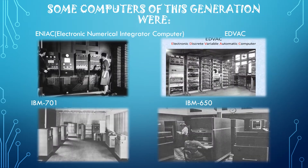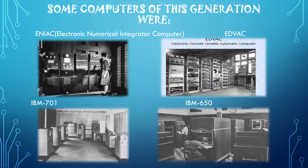Some of the computers in this generation include the Electronic Numeric Integrator Computer (ENIAC), the Electronic Discrete Variable Automatic Computer (EDVAC), the IBM 701, and the IBM 650.